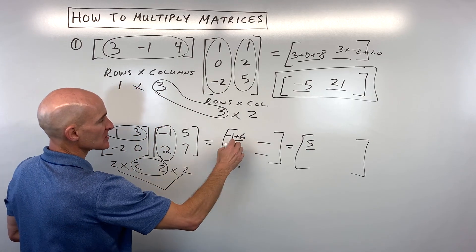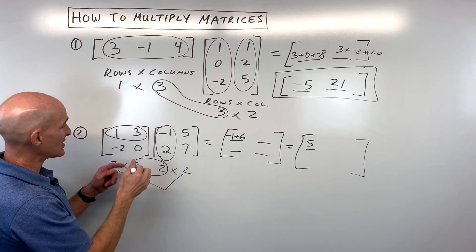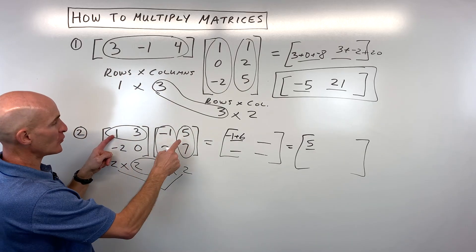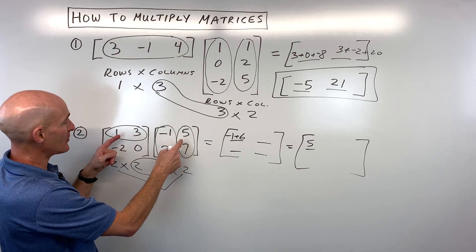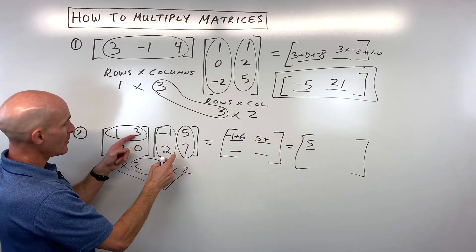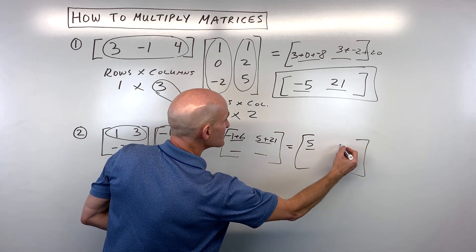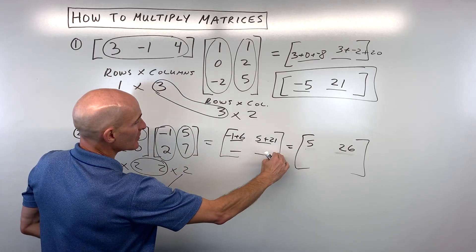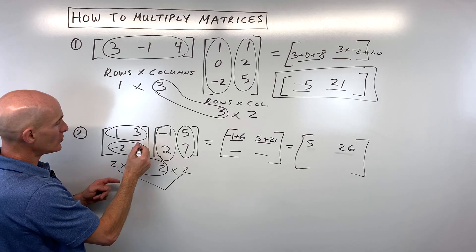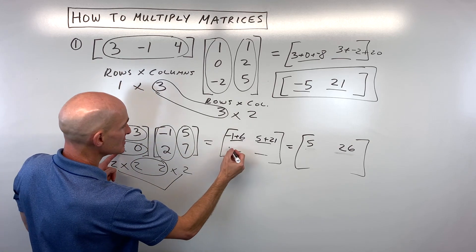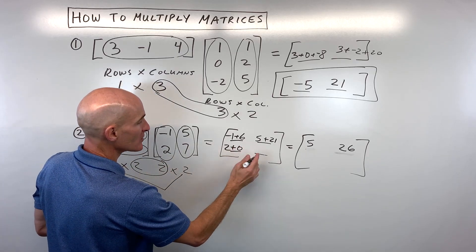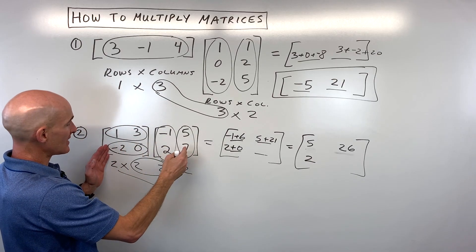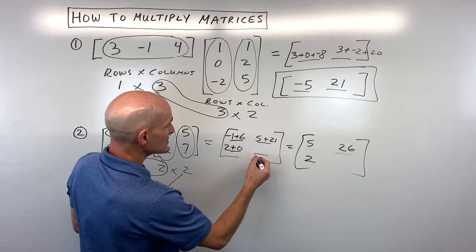Now let's go to this one. This is in the first row, second column. First row times second column: one times five is five, plus three times seven is twenty-one — adds up to twenty-six. Next, this one is in the second row, first column. Second row times the first column: negative two times negative one is two, plus zero times two is zero — two plus zero is two. Last one: second row, second column — negative ten plus zero, which is negative ten.